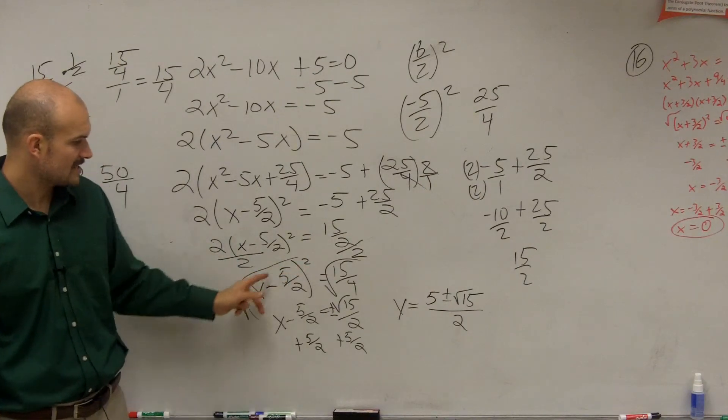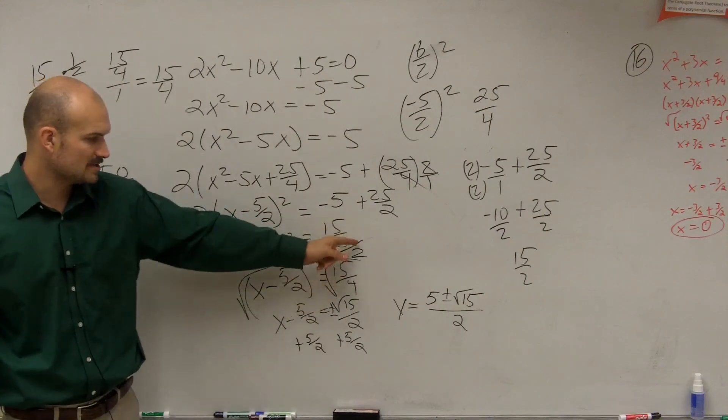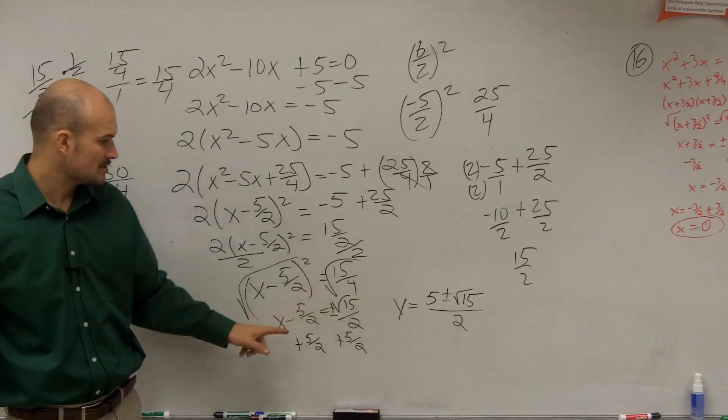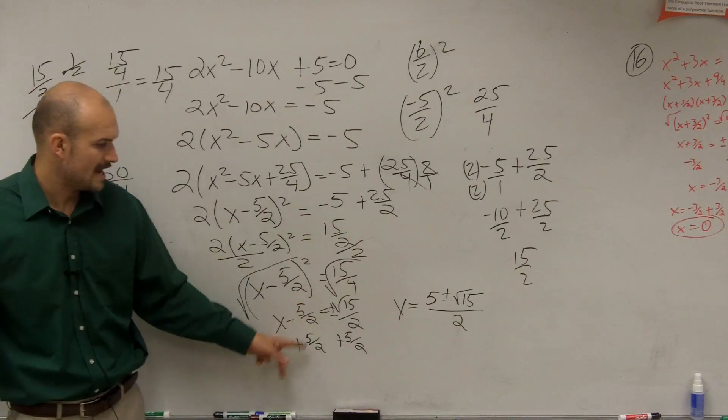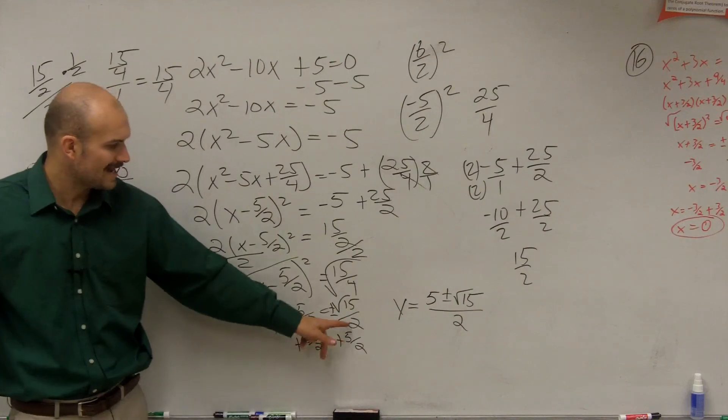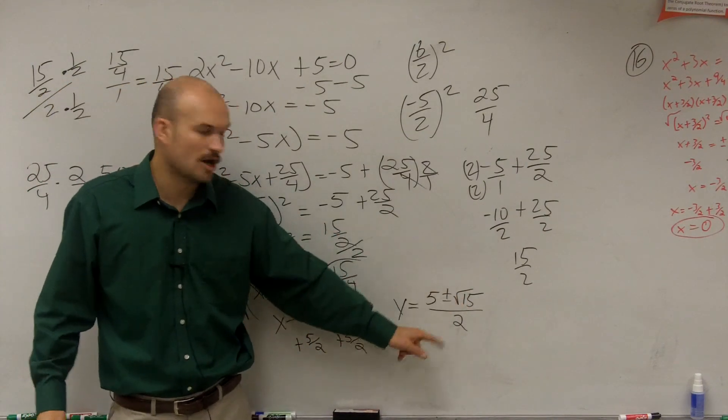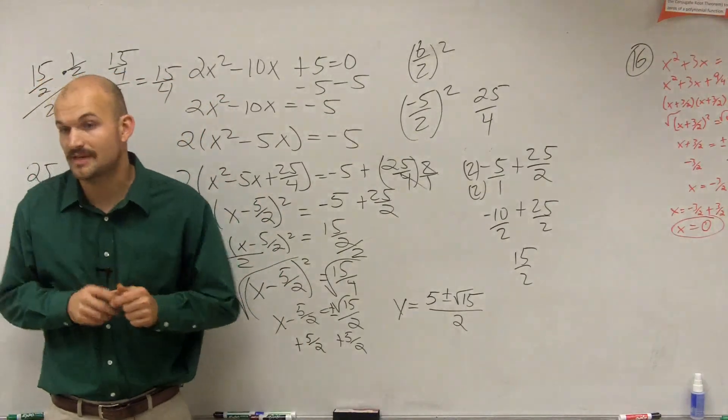Then, so now I have x minus 5 half squared equals 15 divided by 4. I take the square root of both sides. I can't take the square root of 15, but I can take the square root of 4. So it ends up equals plus or minus the square root of 15 divided by 4. Add the 5 halves to both sides. I can combine them, but I can't combine the 5 plus the square root of 15, but I can all put them over 2. It's a lot of work. Some steps, definitely.